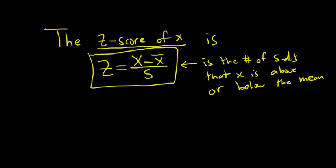So if your z-score is 2, your x-value is 2 standard deviations above the mean. I'll explain that with some numbers later, so it'll make more sense.